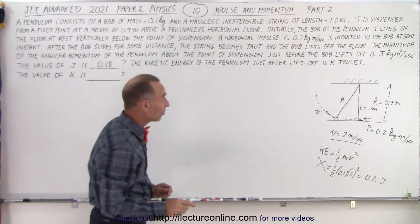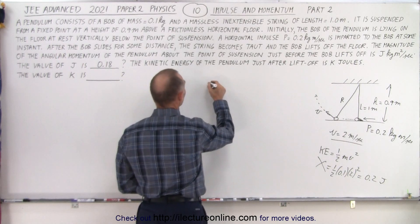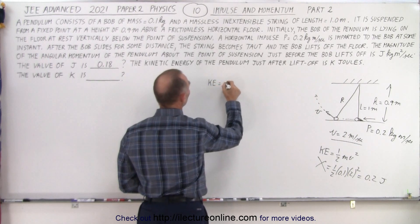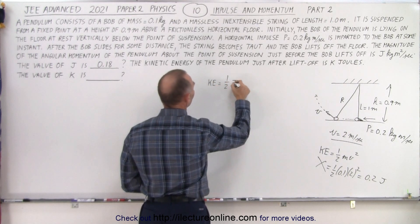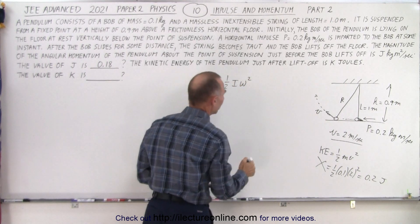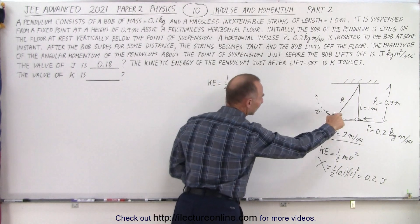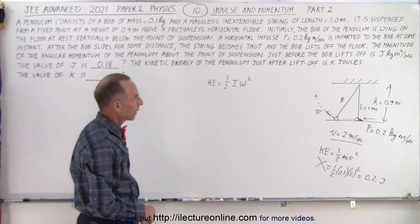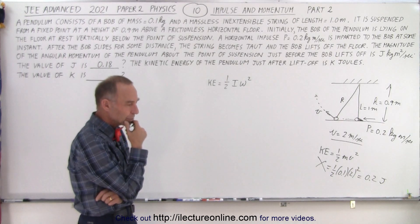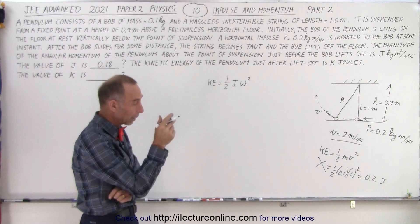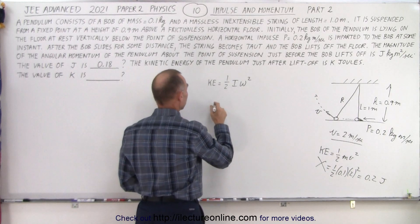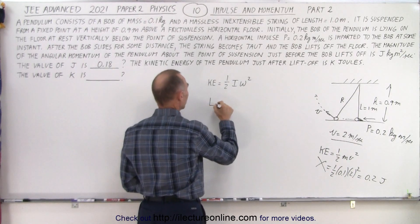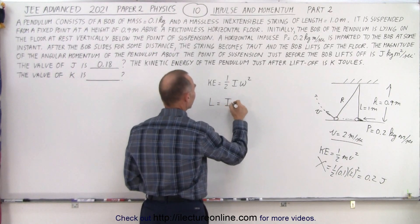So what we need to do instead is think it this way. We need to say that the kinetic energy is going to be equal to 1/2 I omega squared, and we need to find the omega after the bob leaves the floor. How do we do that? Well, we have the angular momentum equation, L is equal to I times omega.